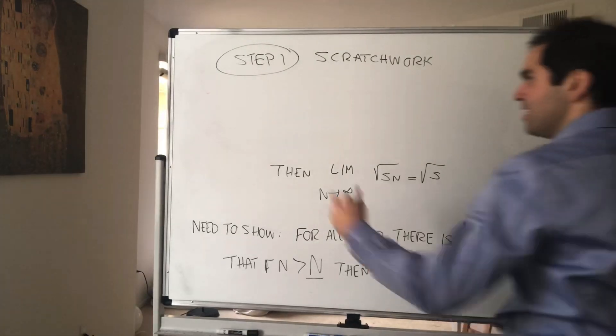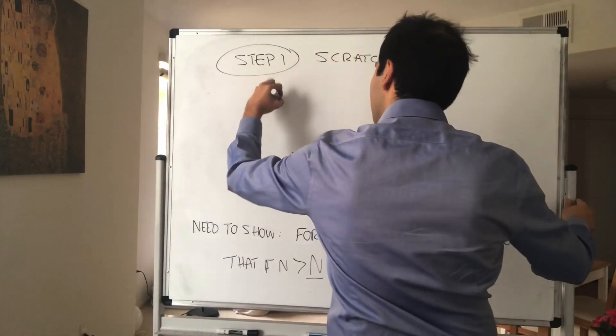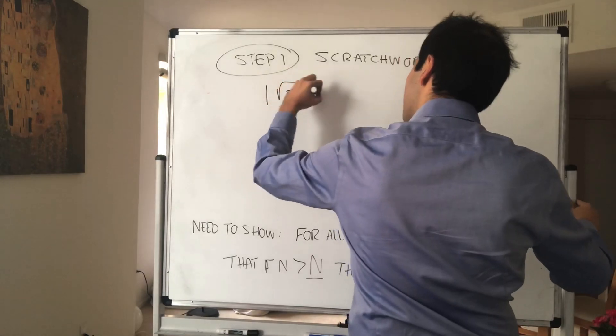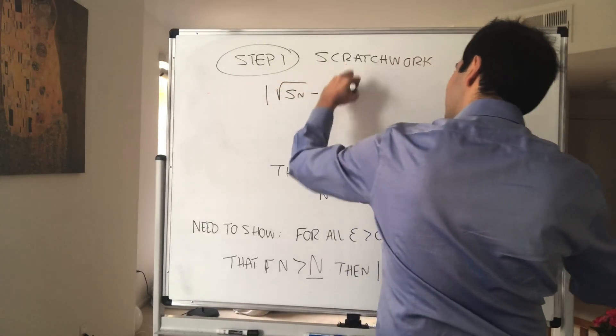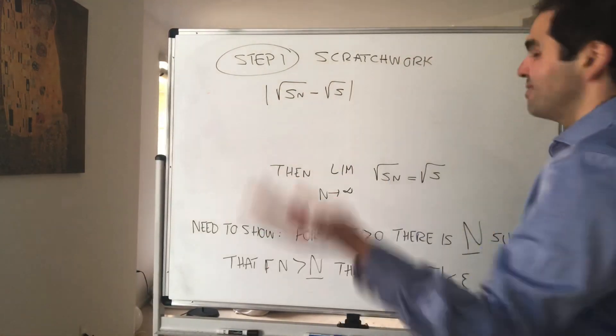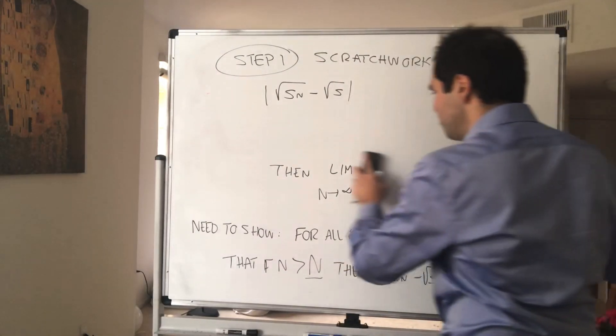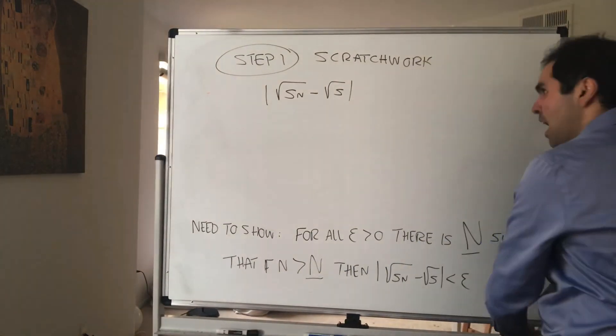Now notice what we have to do. We have to analyze this difference of square roots: square root of Sn minus square root of s.